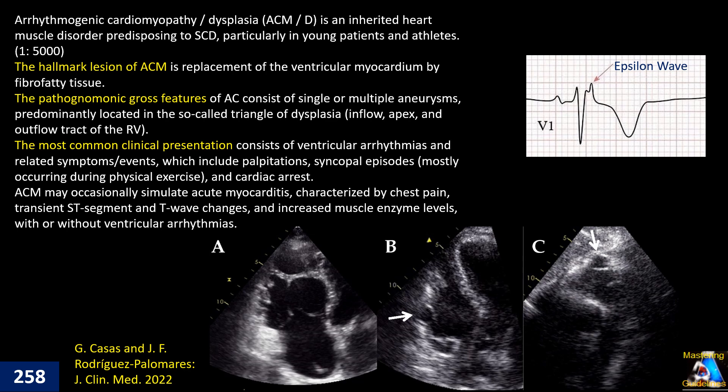Generally we use the term arrhythmogenic cardiomyopathy or dysplasia. The mechanism is mutation in the desmosome, which can involve many different genes. The pattern of genetic transmission is usually autosomal dominant, but in many cases it can be recessive. The spectral penetrance and presentation of the gene can be completely different in each patient — in some cases they carry the mutation without any disease progression.